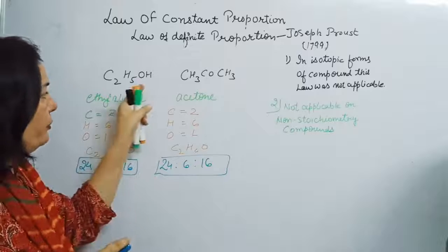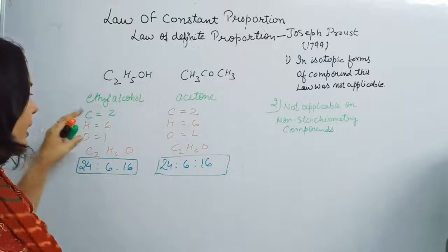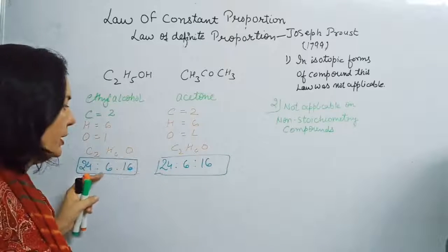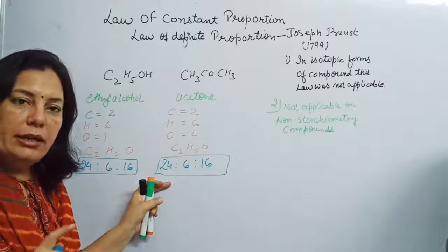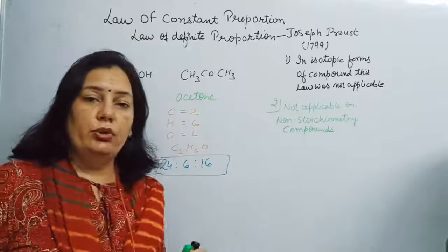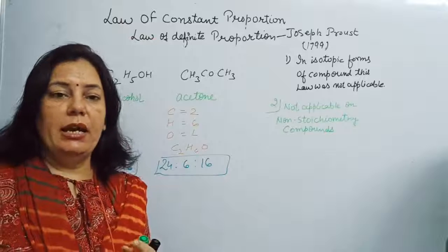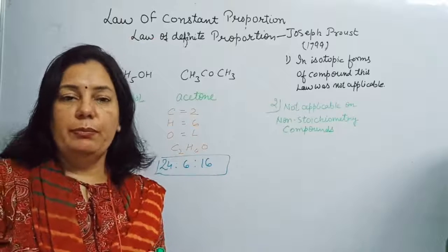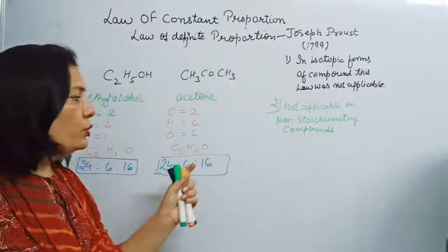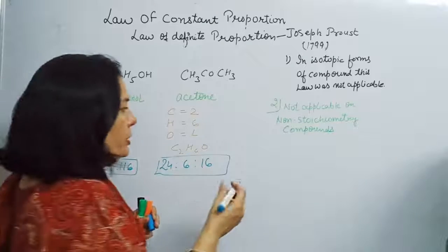So the two compounds are different, their properties are totally different, but the elements present are the same and their ratio is also the same. According to the law of constant proportion, similar elements should be present in the same proportion by mass — but here two different compounds are being formed, which is a drawback of this law.